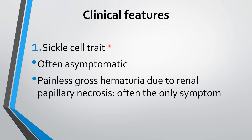First, let us see the manifestations in sickle cell trait. The sickle cell trait is often asymptomatic because only one hemoglobin is abnormal — the other hemoglobin is normal in children with sickle cell trait. The only symptom that may be present is painless gross hematuria, which occurs due to renal papillary necrosis in the kidney.